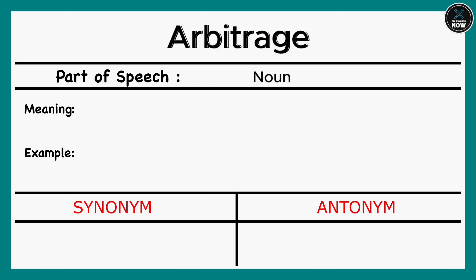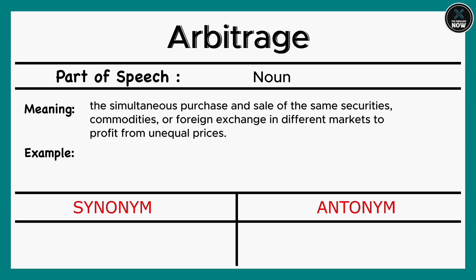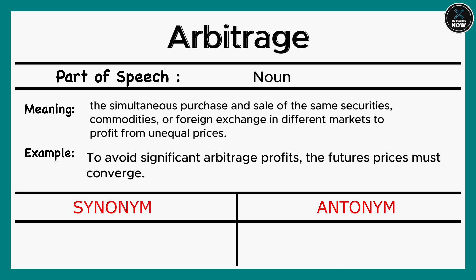Arbitrage: The simultaneous purchase and sale of the same securities, commodities, or foreign exchange in different markets to profit from unequal prices. Example: To avoid significant arbitrage profits, the futures prices must converge.